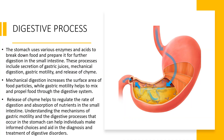The stomach is one of the key organs in digestion, using various enzymes and acids to break down food and prepare it for further digestion in the small intestine. The stomach secretes digestive juices including hydrochloric acid, pepsinogen, and mucus. Hydrochloric acid creates an acidic environment that activates pepsinogen to become pepsin, a digestive enzyme that breaks proteins into smaller peptides.